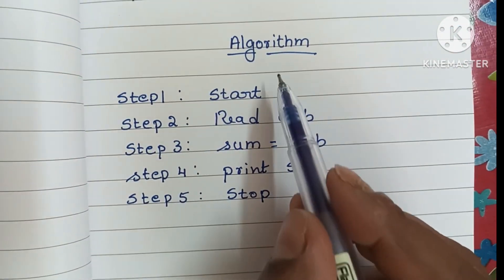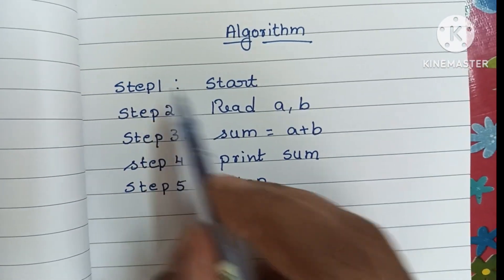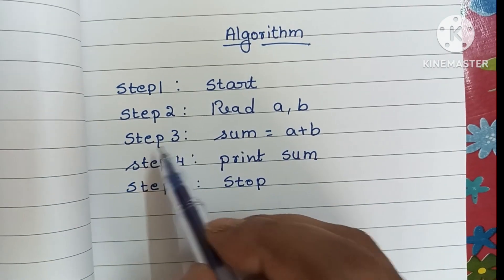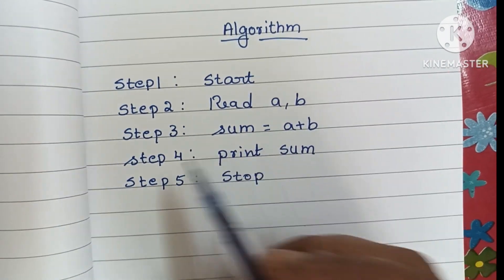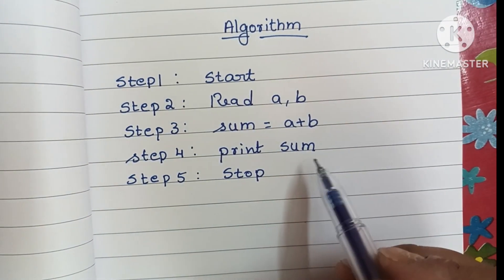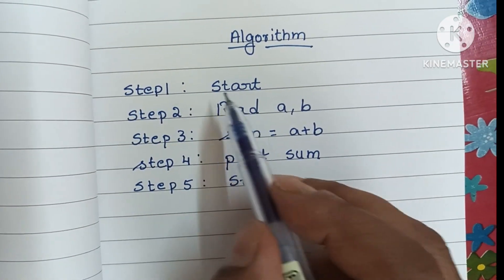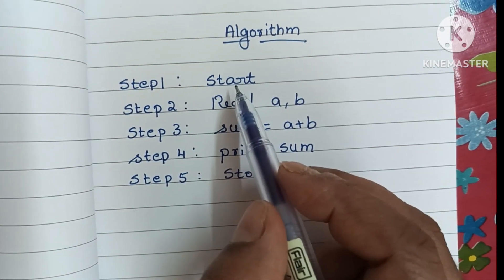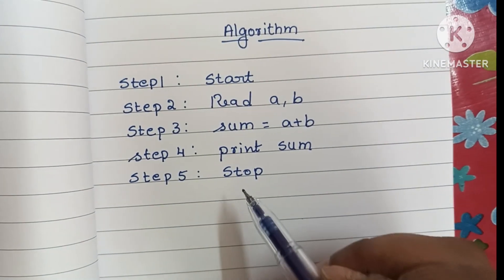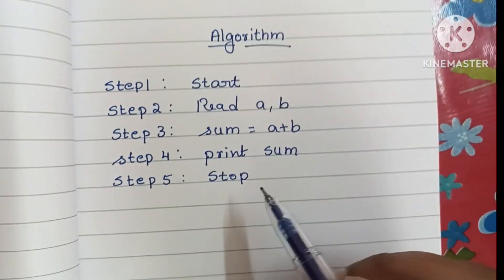So guys, this is the algorithm to add two numbers: step one, start; step two, read a and b; step three, sum equals a plus b; step four, print sum; step five, stop. In algorithm, step one always starts with start statement, and the last step should be stop statement.